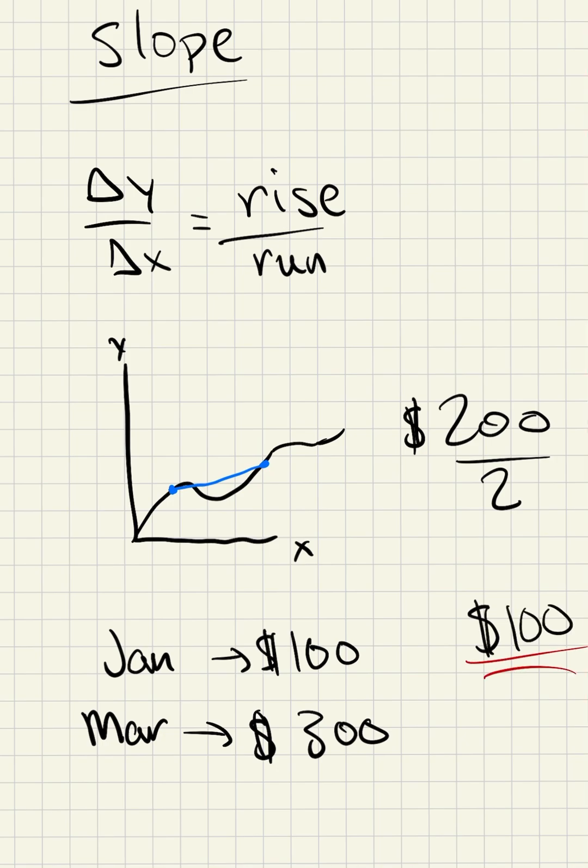So that's kind of what the slope is all about. It's just telling us an average between two variables, their relationship on some interval, or a rate of change, if that's how you want to look at it.